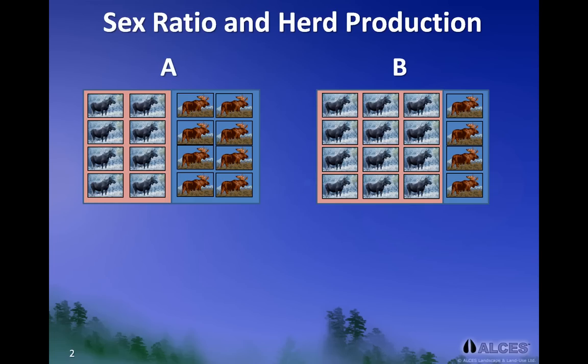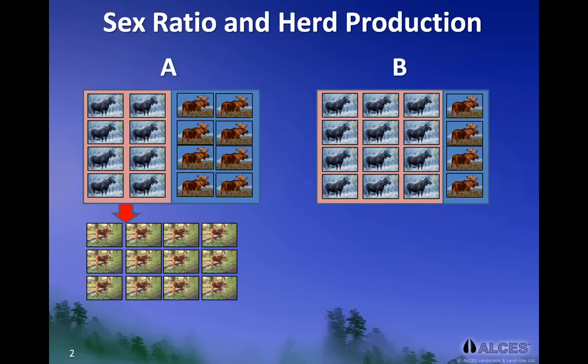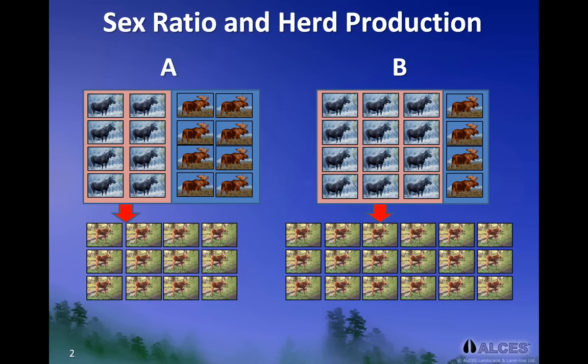Population A has an even 1 to 1 cow to bull sex ratio, whereas the sex ratio in population B favors cows to bulls by a ratio of 3 to 1. If we assume that half of the cows produce single calves and the other half produce twins, we can project that the 80 cows in population A will produce a total of 120 calves in the spring. When the 120 cows in population B calve in the spring, they will have dropped 180 calves on the ground.